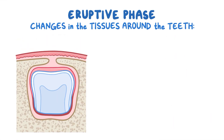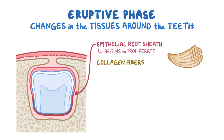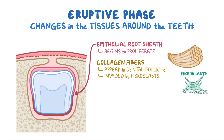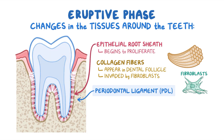As the tooth erupts, the epithelial root sheath begins to proliferate and starts to form the root. At the same time, bundles of collagen fibers start appearing in the surrounding dental follicle. The collagen bundles get invaded by fibroblasts that lay down fibrous tissue and thicken the bundles to form the periodontal ligament, or PDL. The first PDL fibers appear at the cervical area of the tooth root and radiate coronally to the alveolar process. As the tooth erupts, more PDL fibers appear along the length of the root and existing ones become more prominent.